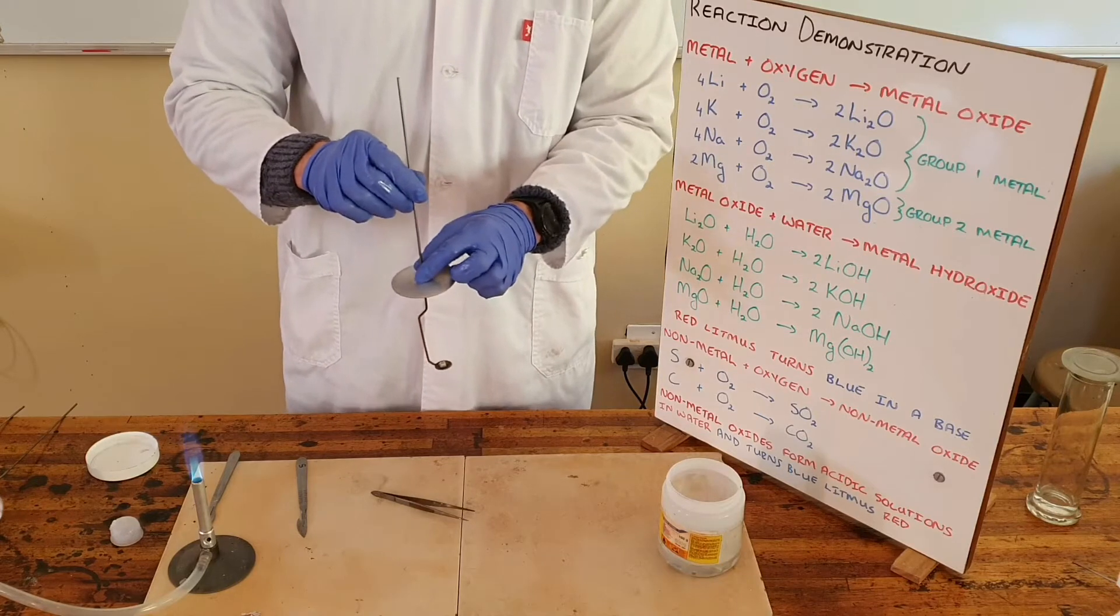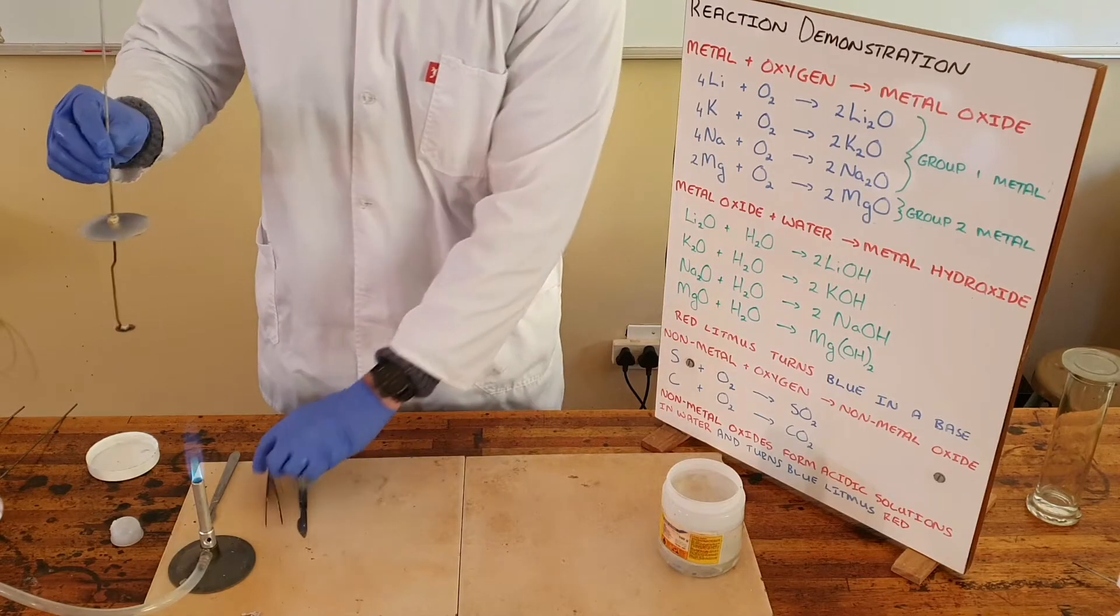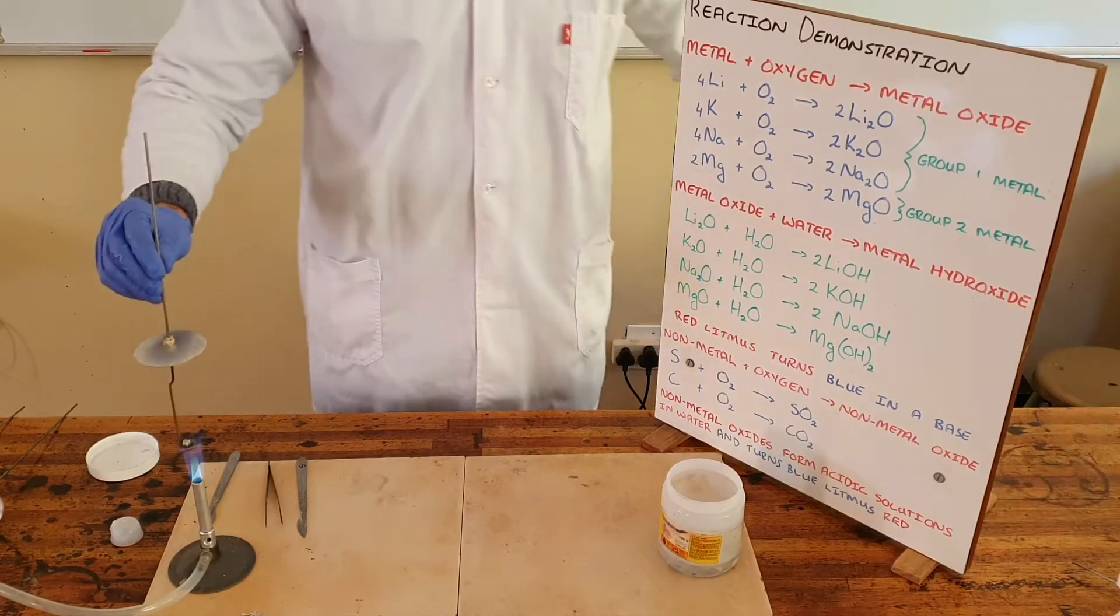What we do is place this potassium piece of metal onto our deflagrating spoon and put this over a Bunsen burner.